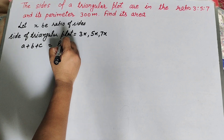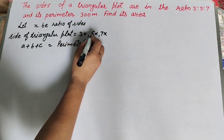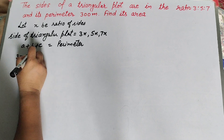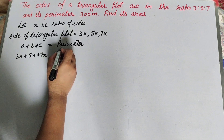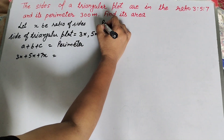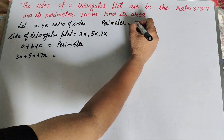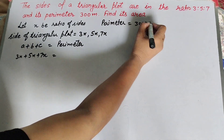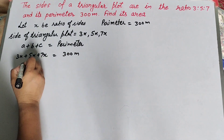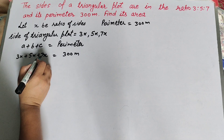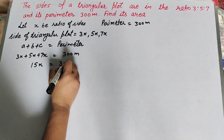To find the perimeter of the triangle we add the sides: a + b + c = perimeter. So 3x + 5x + 7x = 15x, and this is equal to the perimeter, which is given as 300 meters.